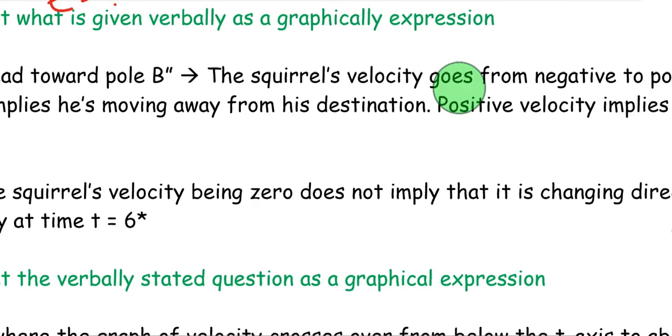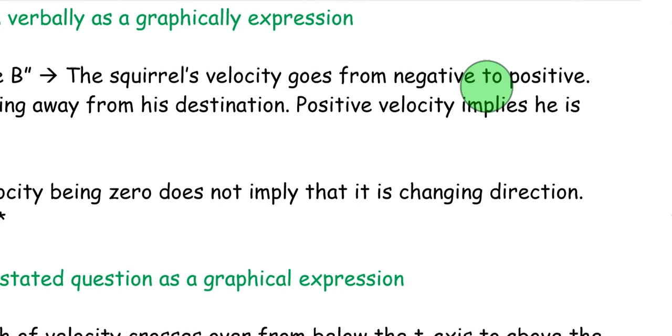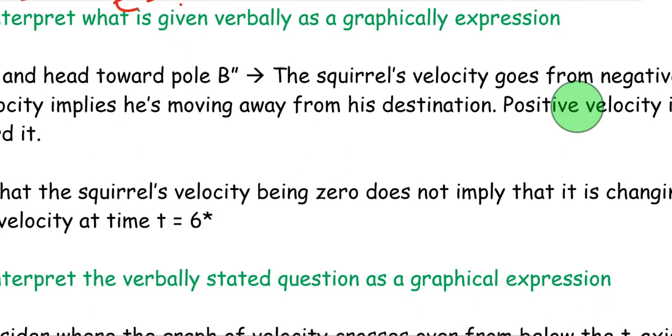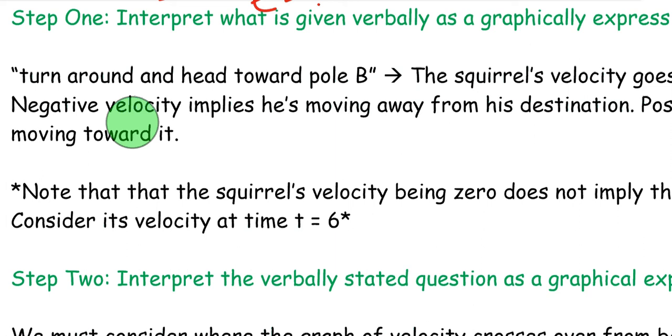Let's go ahead and answer that. The squirrel's velocity goes from negative to positive when that occurs. In other words, it's going from left to right. Negative velocity implies he's moving away from his destination. Positive velocity implies he is moving forward. Just remember, with velocity sign, it always has to do with a reference point. You cannot have velocity without a reference point.